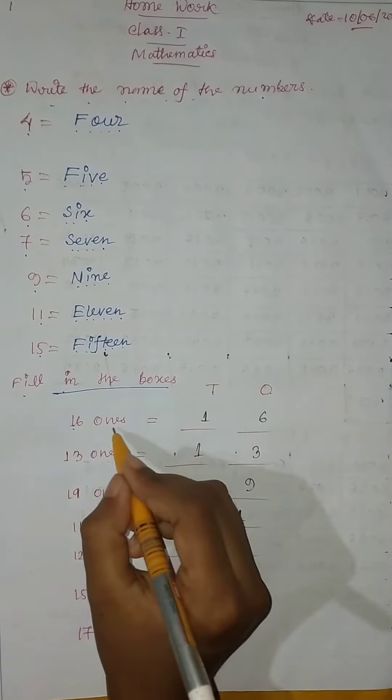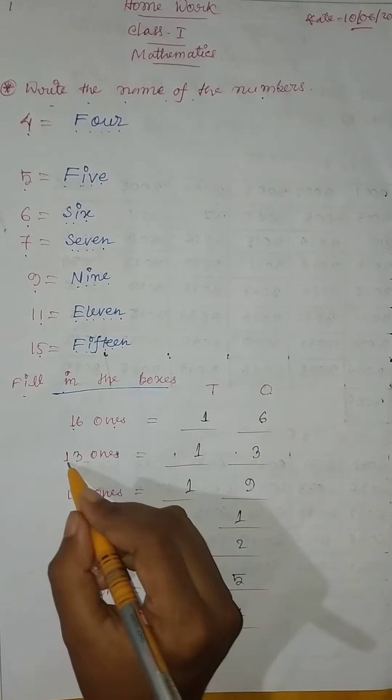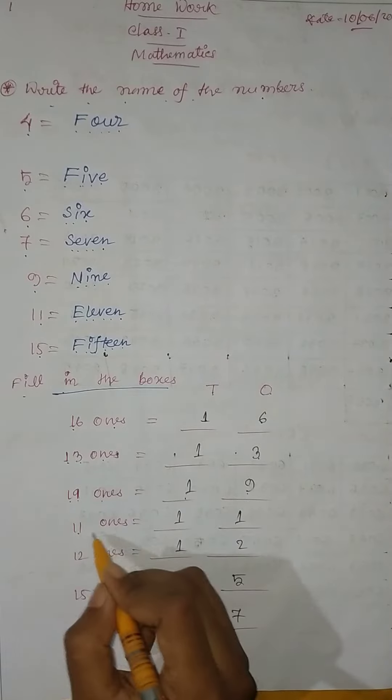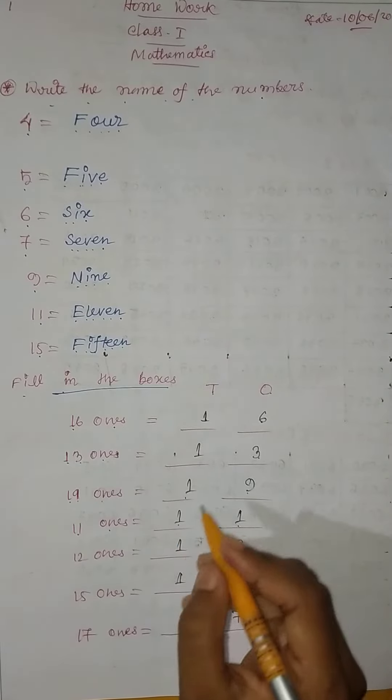1 stands, 16 ones: 1, 6. 13 ones: 1, 3. 19 ones: 1, 3. 11 ones: 1, 1.